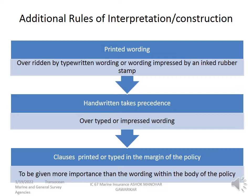Handwritten text takes precedence over typed or impressed wording. The clauses printed or typed in the margin of the policy are to be given more importance than wording within the body of the policy. You will find in the margin of the policy they give the clauses in small print, and that is having more meaning. This is the way how it is to be interpreted whenever there is ambiguity.